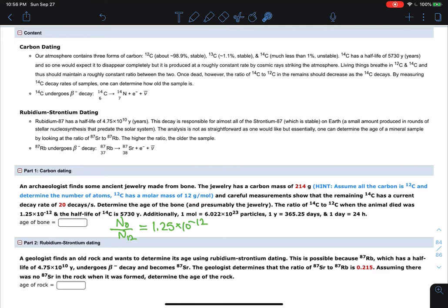And so, as a result, when we look at, say, some rock or something, and we see strontium in it, we know it came from rubidium.